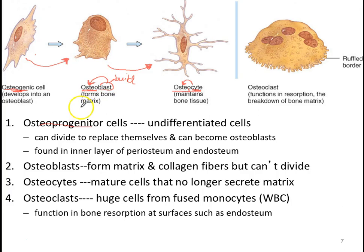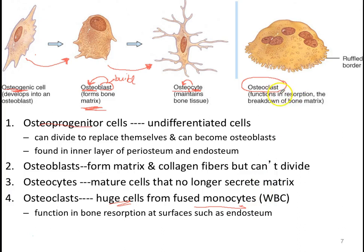Now, these cells build bone, but if you build it, you also have to be able to break it down. Sometimes our bones can be reformed, and the job of breaking down bone falls to something called an osteoclast. These are really interesting cells — they're huge, actually fused monocytes, which are a type of white blood cell. Several monocytes fuse together to form osteoclasts, and right along the ruffled border they break down bone, releasing calcium into the bloodstream when levels are too low or when bone needs to be reformed.